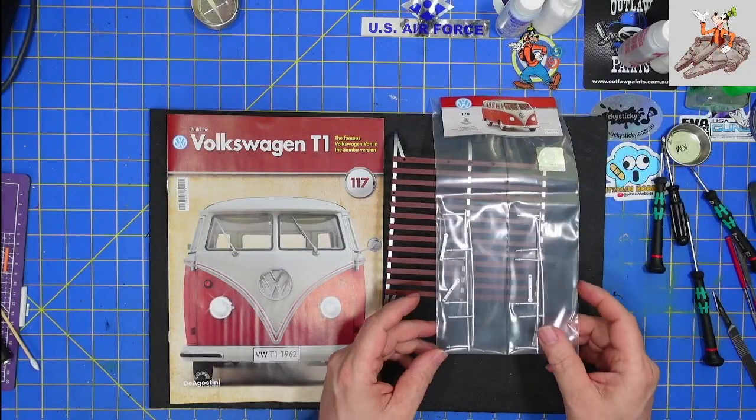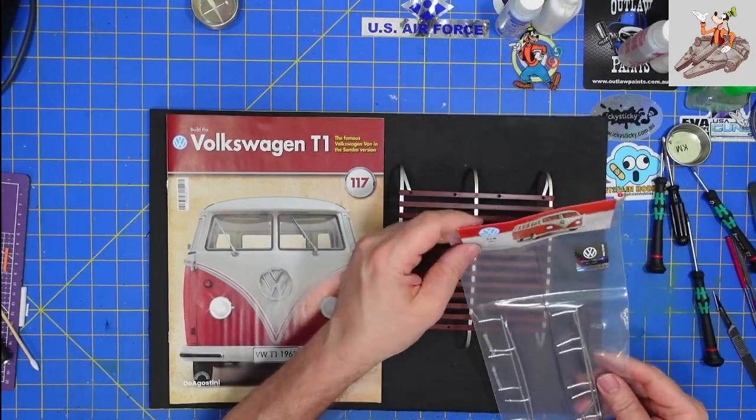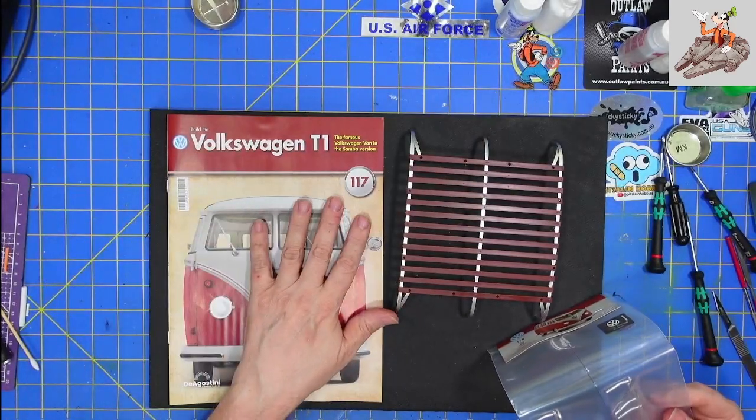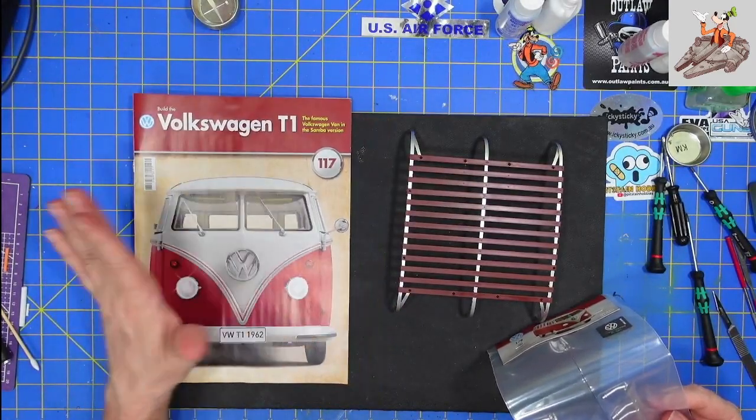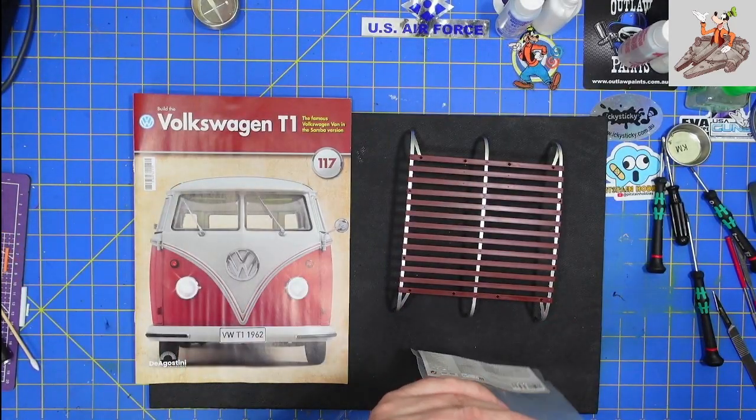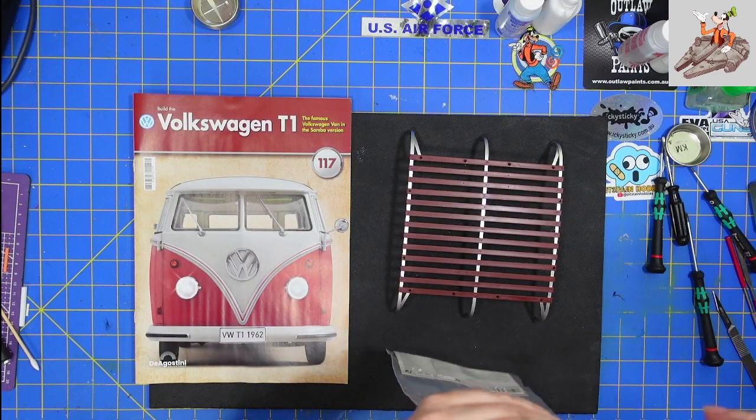Hello and welcome to Buckman's Model Mania. Today we're going to be completing stage 117 of Volkswagen T1 Samba from Agostini. Let's go ahead and get the parts out.